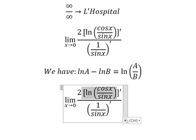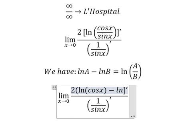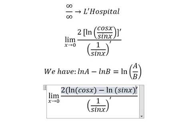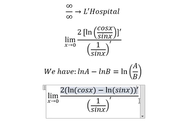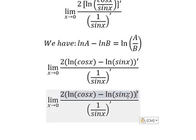So we have ln of cosine x minus ln of sine x. Now we need to do first derivative of this one, this one, this one, and this one. So they should be like this.